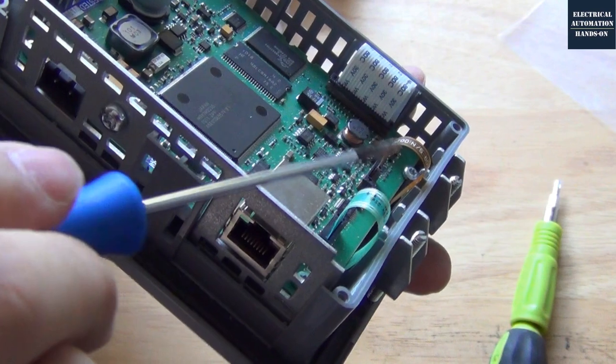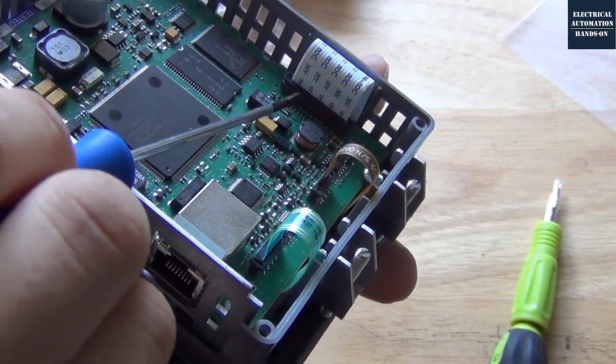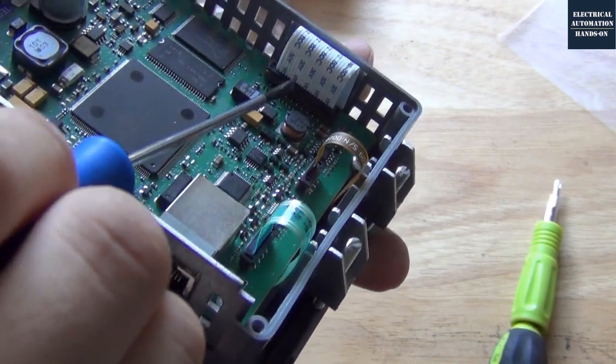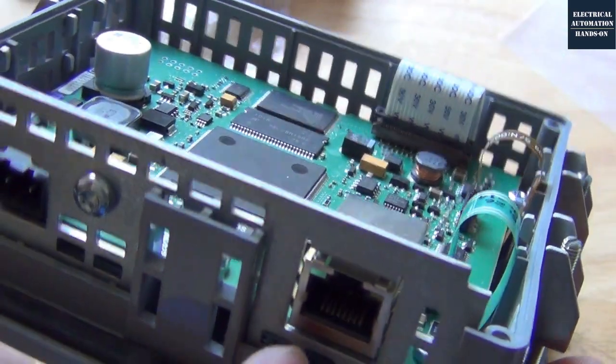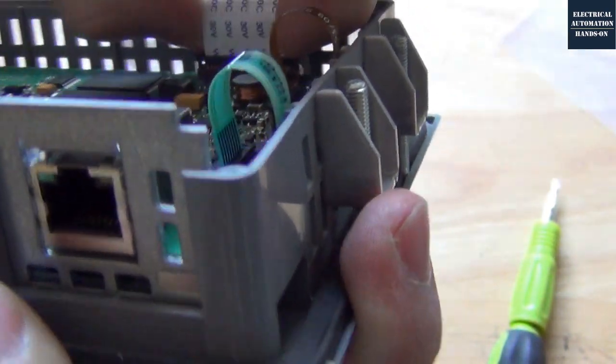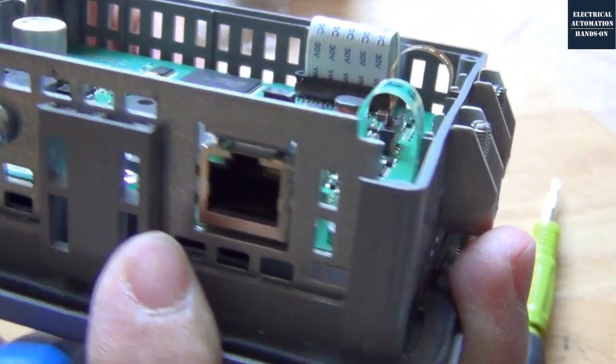Before we unplug the connectors, take care, we need to push this black connector. This black connector, push them out to unlock this connector. We push up like this way. Look at the difference. If I push down, that is a lock.